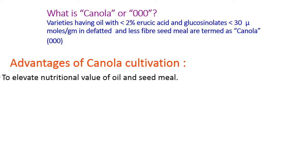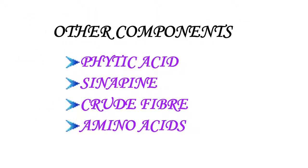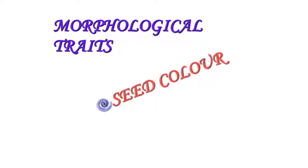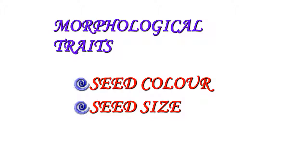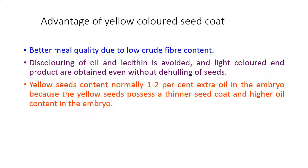Coming to advantages of canola cultivation: it helps to evaluate nutritional value of oil and seed meal, to fetch remunerative market prices, to increase market value and versatile usage of oil and seed meal, and to enhance export potential. Other components in canola type include phytic acid, sinapin, crude fiber, and amino acids. Morphological traits preferred are seed color and seed size. Yellow seeds contain normally 1 to 2% extra oil in the embryo; discoloring of oil and lecithin is avoided, and light colored end products are obtained even without dehulling.